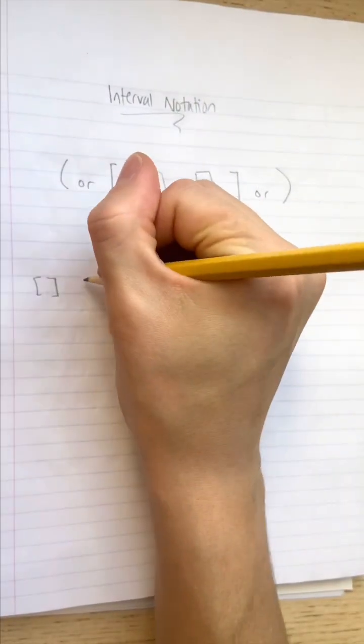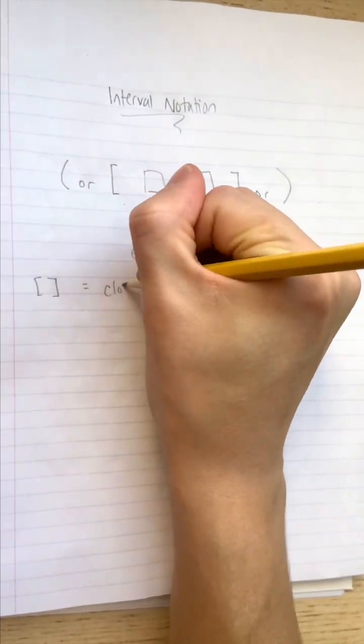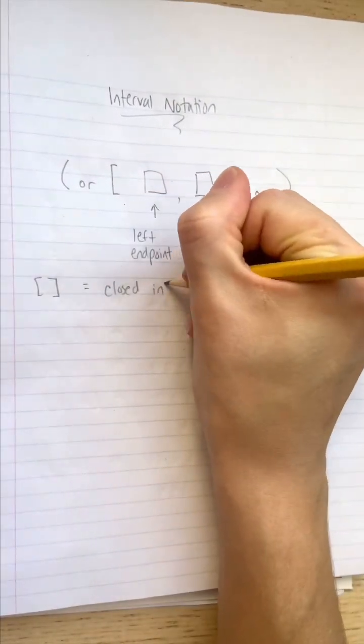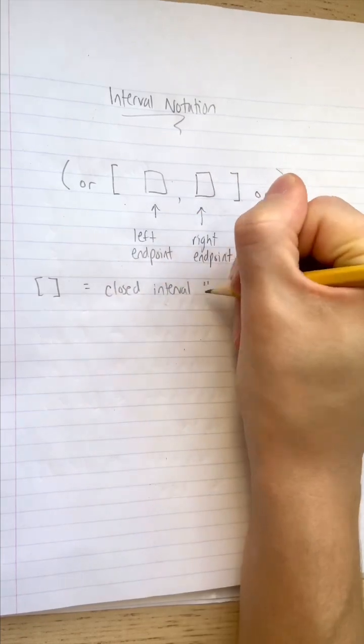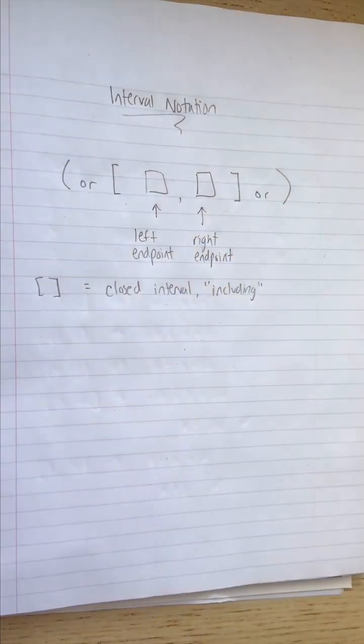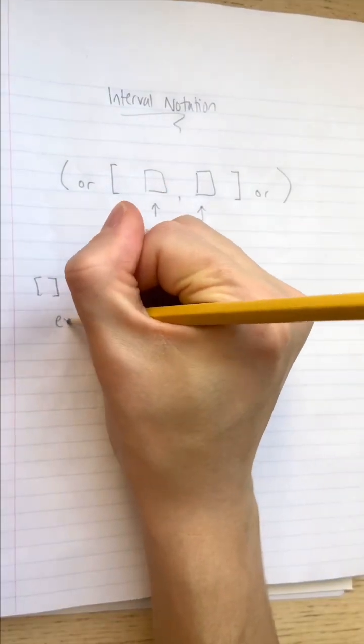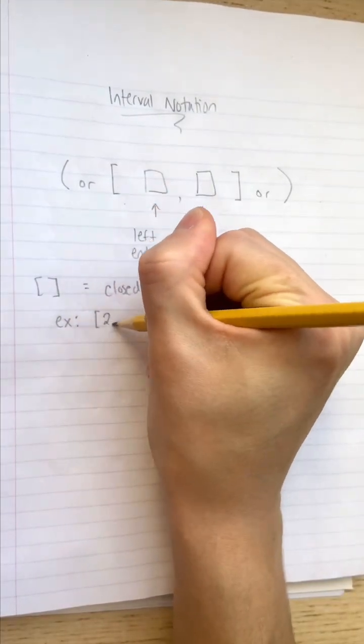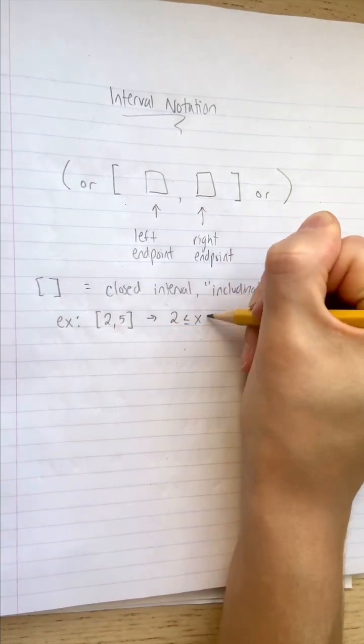Brackets represent closed intervals, where the endpoints are included. For example, 2 comma 5 in brackets represents the range of values from 2 to 5, including 2 and 5.